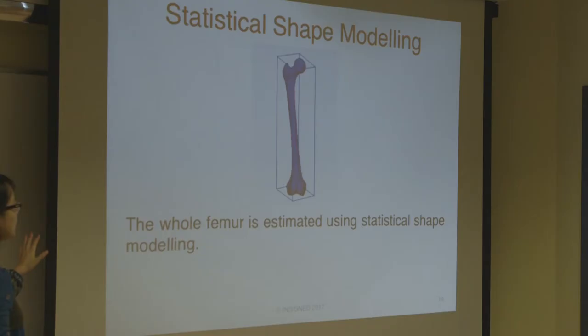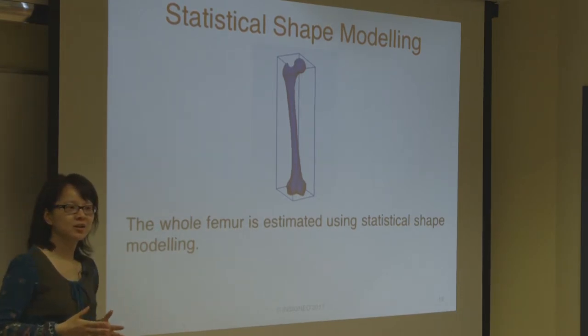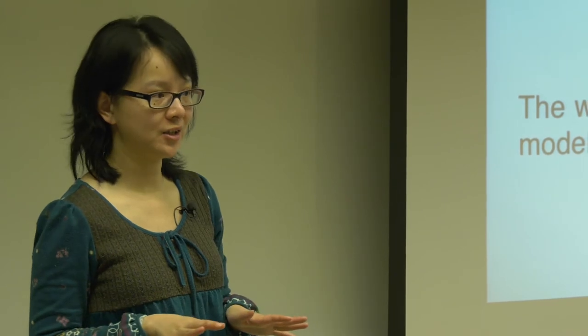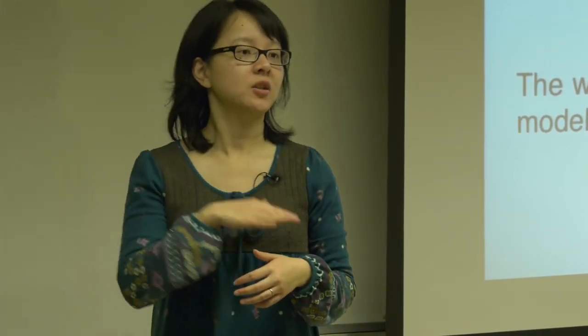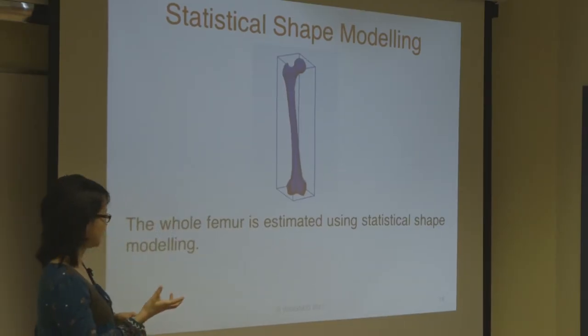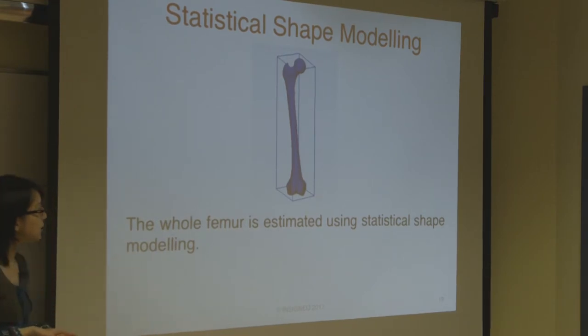I'll go through statistical shape modelling very quickly. It's an additional step we do when we only have the proximal geometry of the femur. If the coordinate system alignment is not significant for your application, you don't have to do that step. But in our application, because we want an accurate model of different fall scenarios, it's important to ensure we align it consistently for every single patient. The whole femur is estimated using a statistical shape modelling approach from a bank at Auckland.